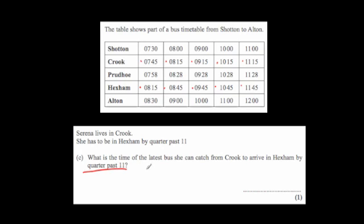She needs to be in Hexham by quarter past 11, which is 11:15. The 7:45, 8:15, 9:15, and 10:15 buses would all get her there in time, but the 11:15 bus would arrive at 11:45 — that's too late. The latest bus she can catch is the 10:15 from Crook, which gets her to Hexham at 10:45, before the quarter past 11 deadline.